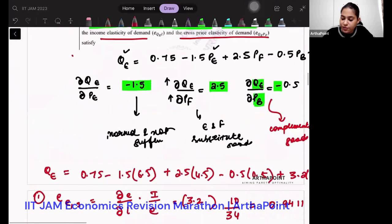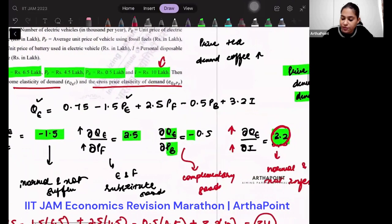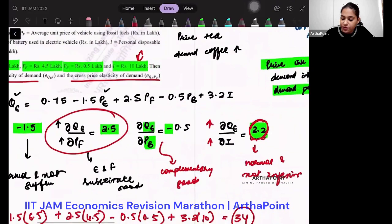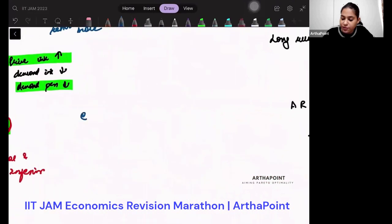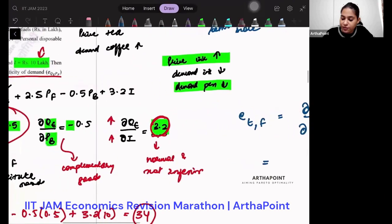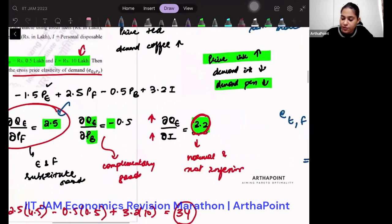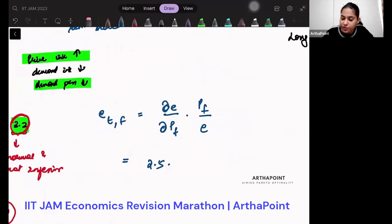Now do the next part. They are asking cross price elasticity with respect to PF. Let's do that. So elasticity with respect to F is going to be how E changes as price of F changes into F by E. So this is what I've got as 2.5, so I'm going to put 2.5 here. And PF is given to us as 4.5, and E I just found out as 34. So if you solve this, you will get 0.3308.